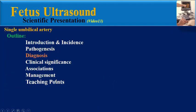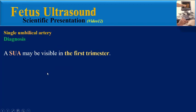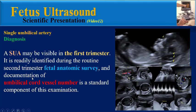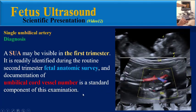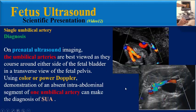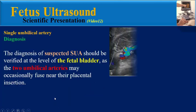How can we diagnose a single umbilical artery in a fetus? A single umbilical artery may be visible in the first trimester, and it is readily identified during the routine second trimester fetal anatomic survey. Documentation of umbilical cord vessel number is a standard component of this examination. On prenatal ultrasound, the umbilical arteries are best viewed as they course around either side of the fetal bladder in a transverse view of the fetal pelvis, using color or power Doppler.